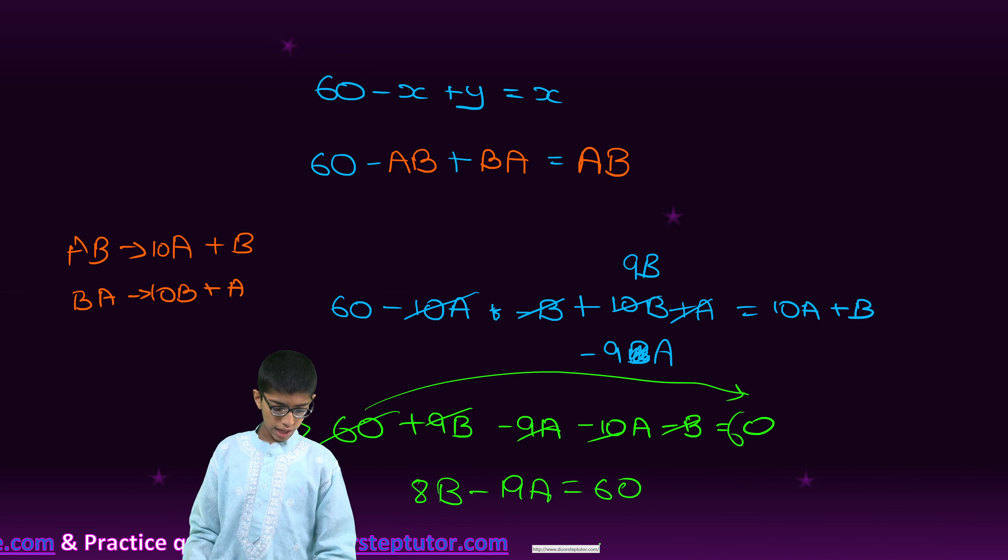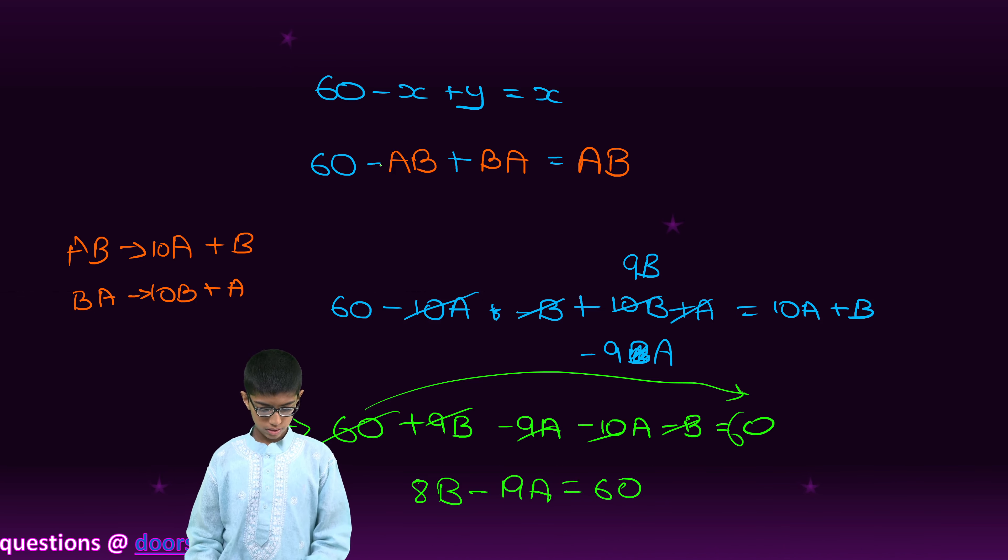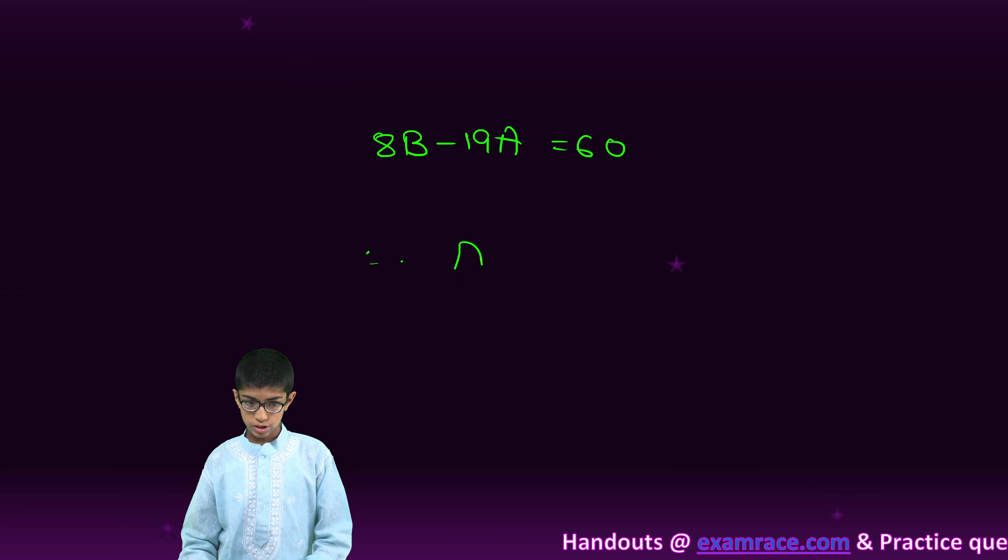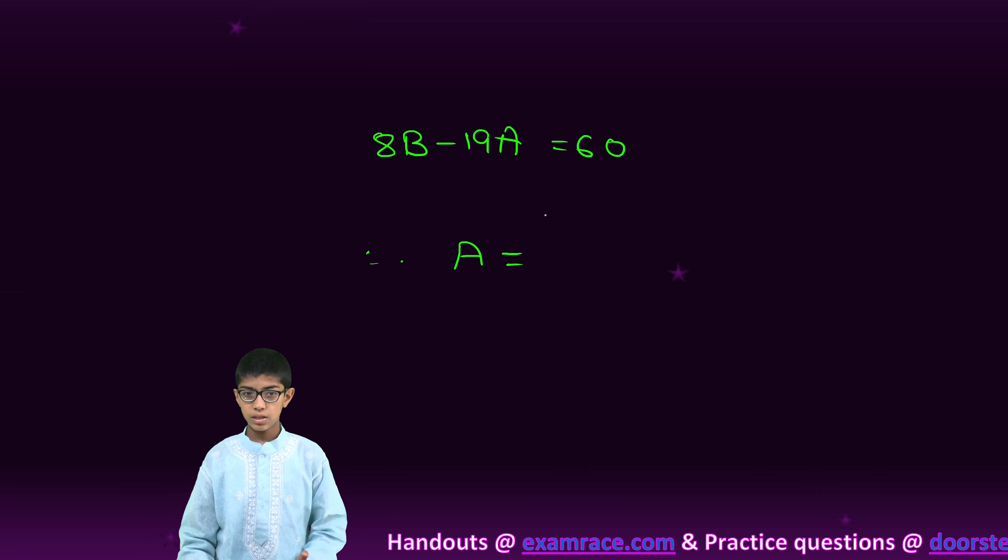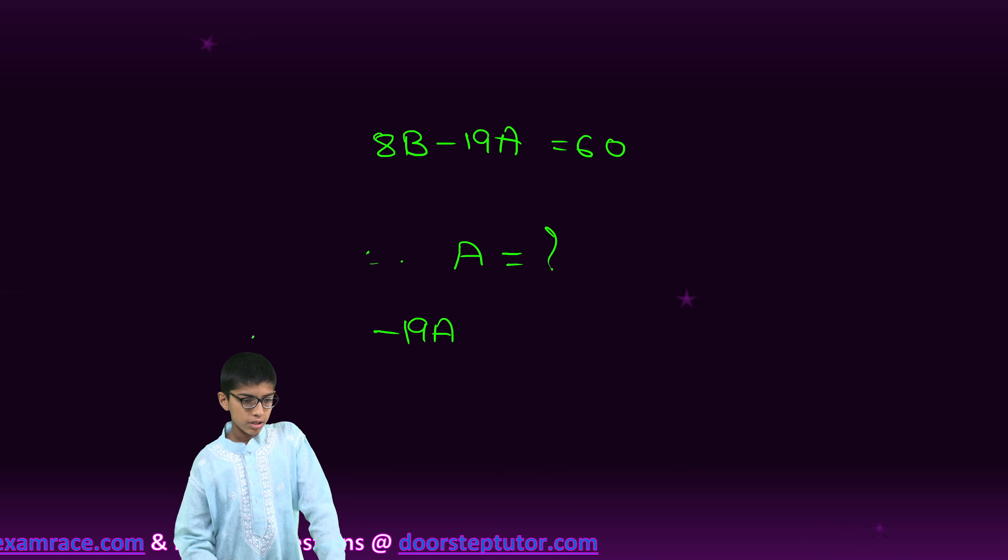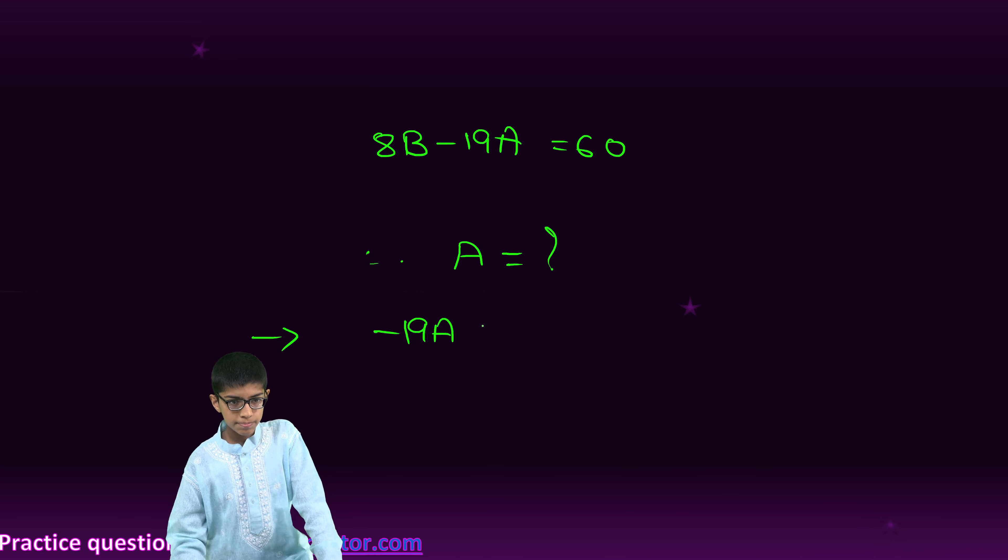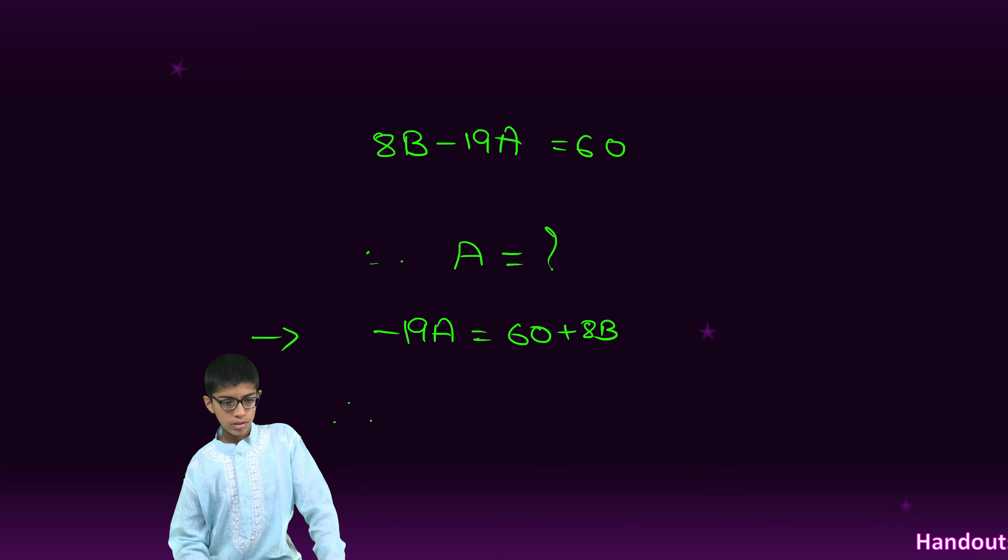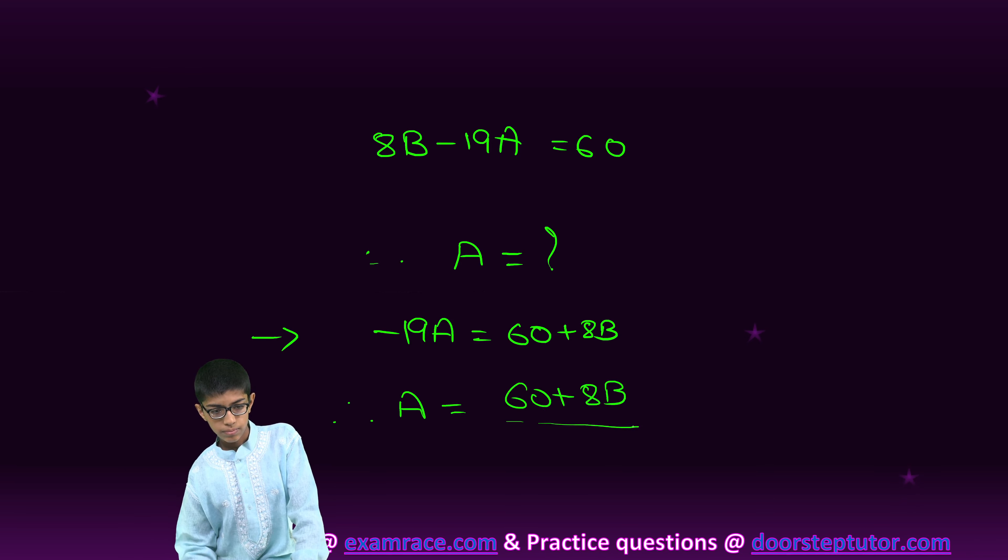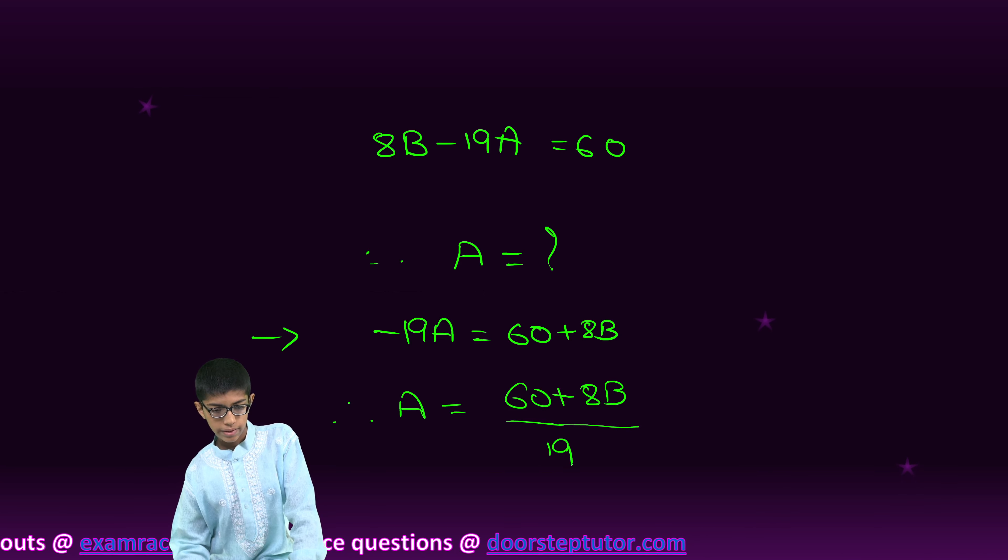Now, we have 8B minus 19A equals 60. Therefore, first of all, A is equal to minus 19A is equal to 60 plus 8B. Therefore, A is equal to 60 plus 8B by 19.